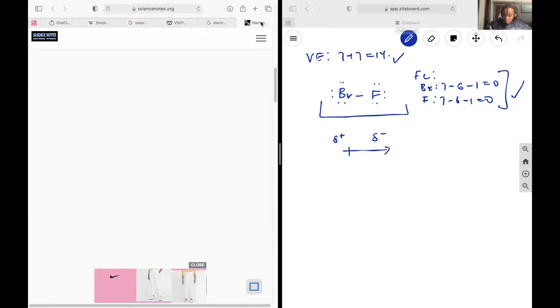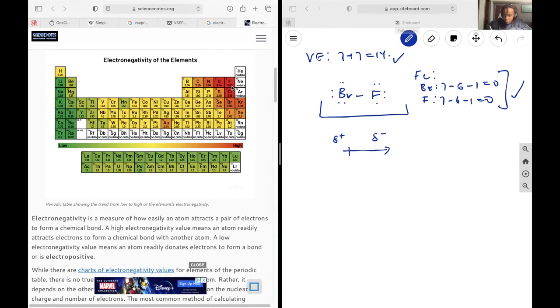And so, if I look at my electronegativities again, I see fluorine, I already know it's the most electronegative one, but I just want to double check, has an electronegativity of 3.98. Bromine has 2.96. We already know from just the periodic table itself that electronegativity is increasing to the right and going up.